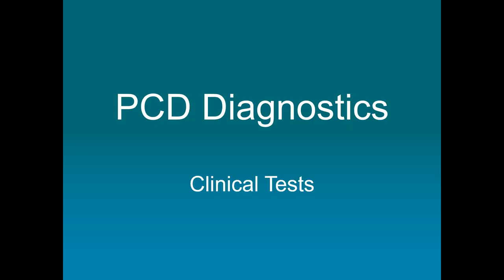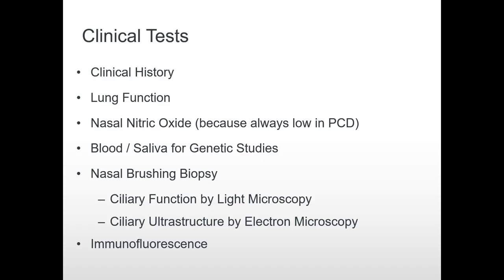How can we diagnose PCD? Firstly, the clinical history of the patient would be looked at for a family history of PCD. Next, we can perform a lung function test and then a nasal nitric oxide test — normally nasal nitric oxide is around 500 parts per billion, but in PCD anything less than 100 parts per billion can be seen. We can do blood and saliva tests for genetic studies, however we don't have all of the genes for PCD just yet. We can also perform a nasal brushing biopsy, where a small brush goes up into the nose and is twisted around to remove some of the epithelial cells lining the nose and airways, which we can then look at using light microscopy, electron microscopy, and immunofluorescence.